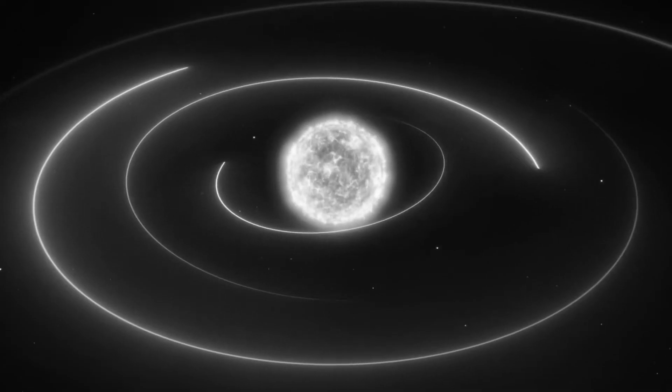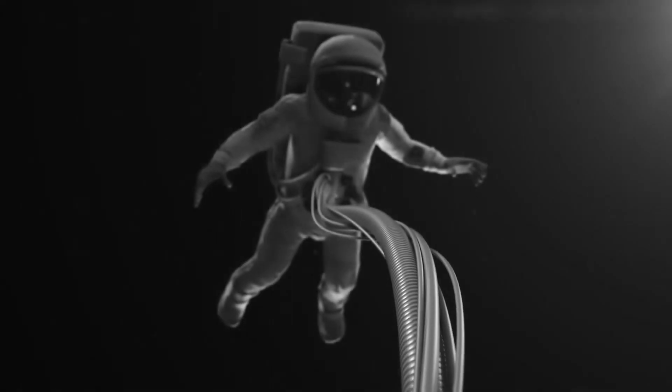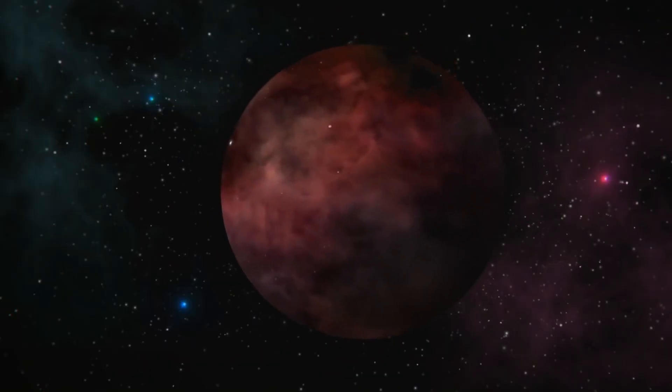It's almost hard to believe that until the early years of the 1990s, astronomers had yet to discover a planet outside the solar system. Even though scientists were certain that other planets orbited other stars, there was little evidence of other planetary systems.